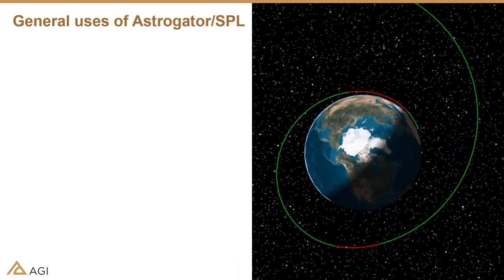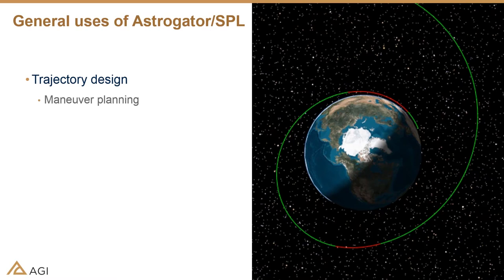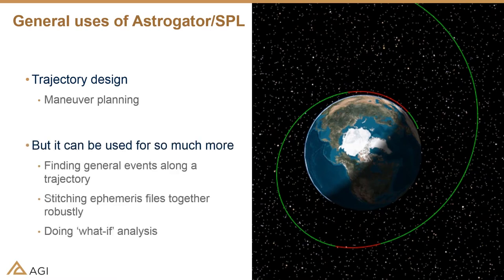When we talk about Astrogator, most people generally think of trajectory design — specifically maneuver planning. But realize that, a lot like many other tools in SDK, it can be just one piece of a much bigger puzzle. You can use it just to find events along a trajectory, stitch ephemeris files together, do a what-if analysis, or have it be just one step in a much bigger process.